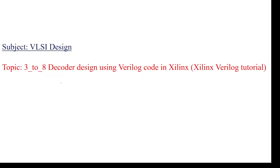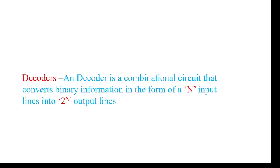I am going to discuss 3-to-8 decoder design using Verilog code. A decoder is a combinational circuit that converts n inputs to 2^n outputs. For example, if n equals 3, then there are 3 inputs and we need to get 2^3 equals 8 outputs.